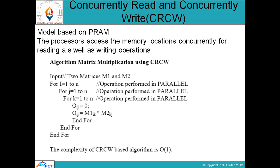Next is concurrently read and concurrently write (CRCW). This model is based on PRAM and processors access the memory locations concurrently for both reading and writing operations — that is, they can read and write at the same time. The algorithm runs loops for i, j, and k each from 1 to n, initializes O[i][j] to 0, multiplies matrix 1 and matrix 2 and stores the result into O[i][j], then ends the loops. The complexity of this is O(1).